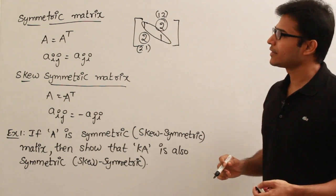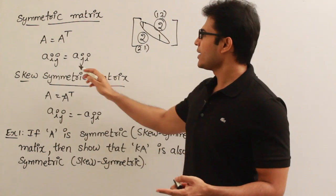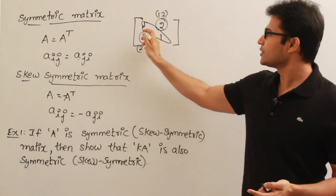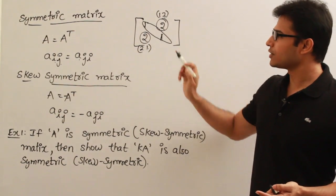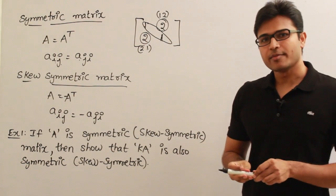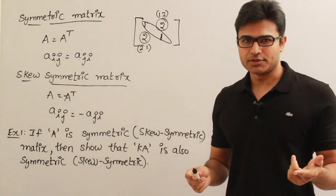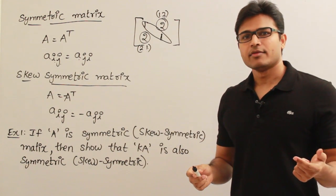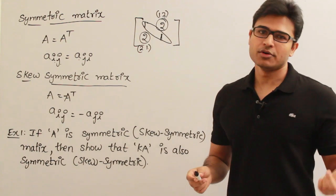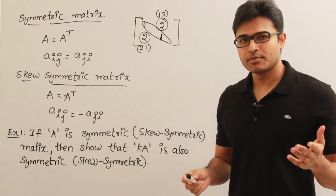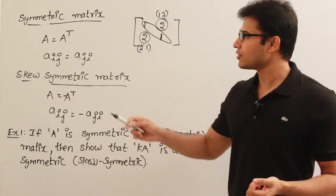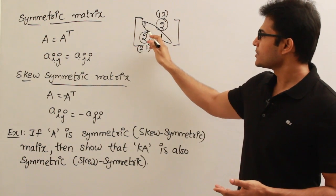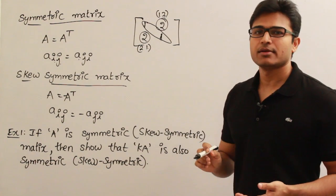The reason is, for principal diagonal elements, obviously Aᵢᵢ equals Aᵢᵢ — which means A₁₁ equals A₁₁ and A₂₂ equals A₂₂. The reason is, if a matrix is transposed, after transposing, the principal diagonal is not going to change. Other elements are going to change, but the principal diagonal elements are not. Therefore, in the definition of symmetric matrix, we need not worry about what happens at the principal diagonal.